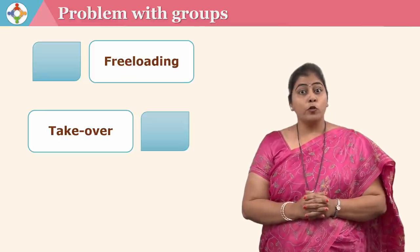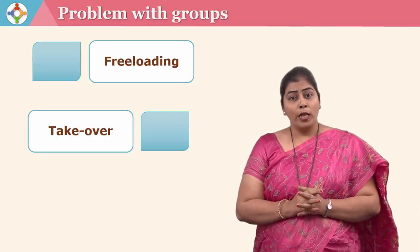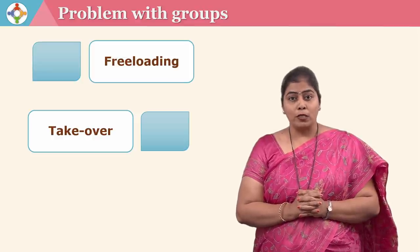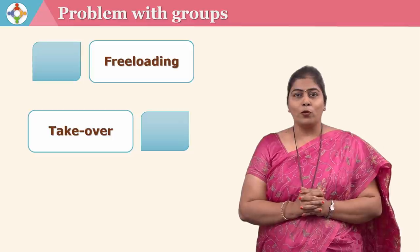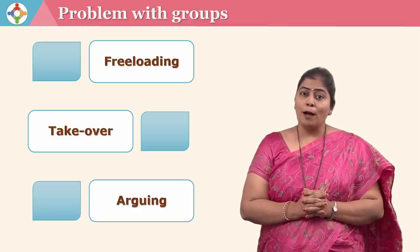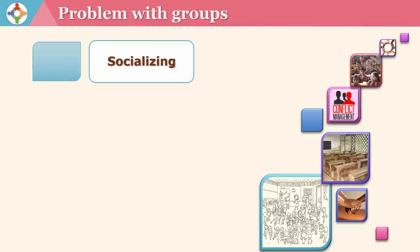Another major problem is takeover, where a dominant group member does not let any other group member do any kind of task. This can also bring about a third problem: arguing, where all members argue with each other wanting their own points to prevail. Socializing could be another problem in a cooperative learning environment. The teacher may assume students are well equipped with social skills but that may not be so; hence the teacher needs to do a need analysis and train students accordingly.